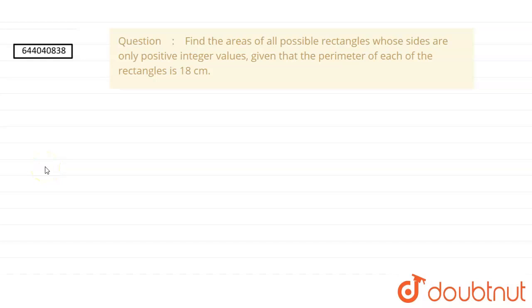So we have a question which says: find the areas of all possible rectangles whose sides are only positive integer values, given that the perimeter of each of the rectangles is 18 centimeters.